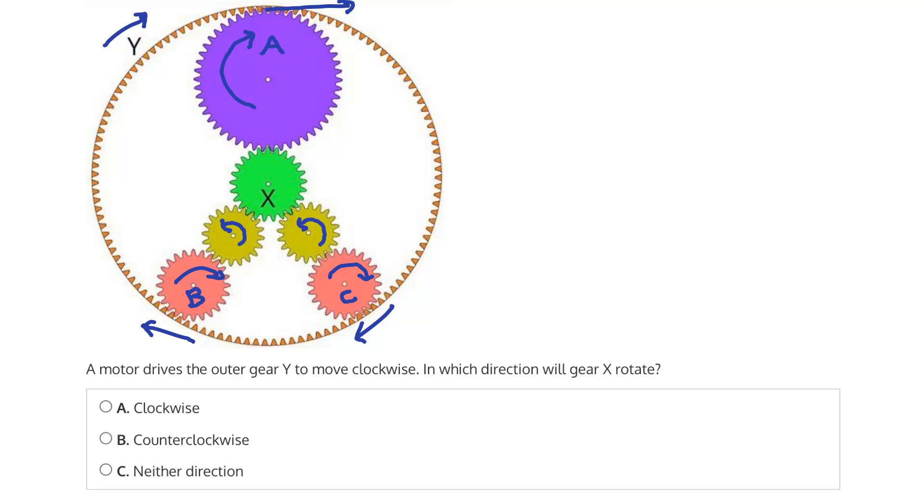And then we can consider what we would expect of X. It's meshed with gear A, and gear A is rotating clockwise. So therefore, we would expect X to go counterclockwise.